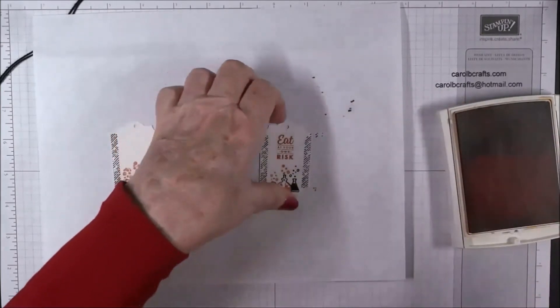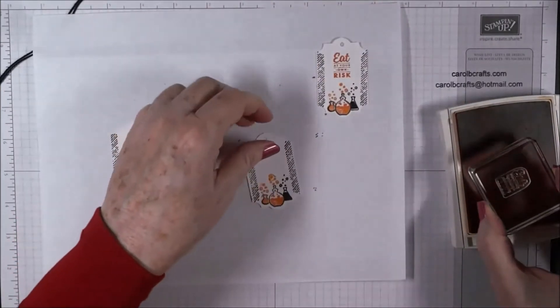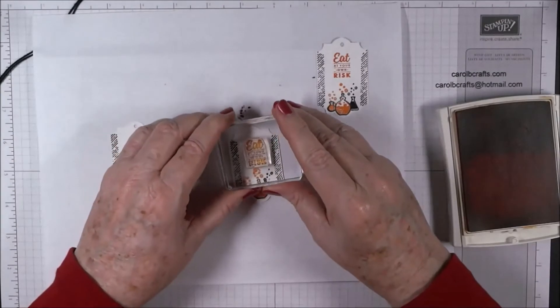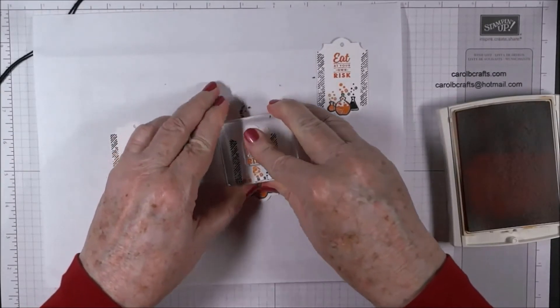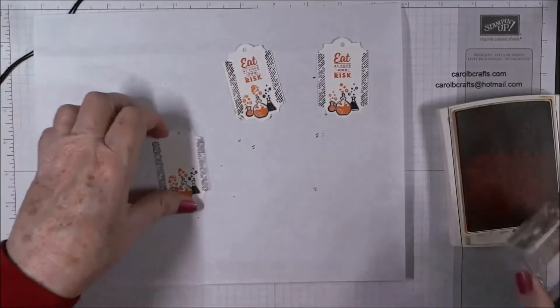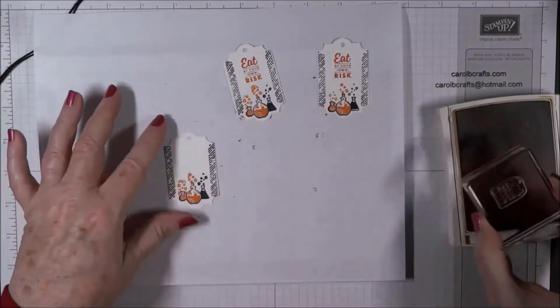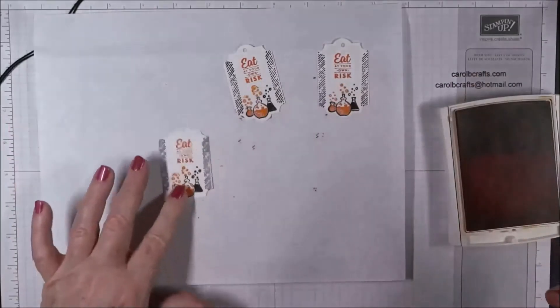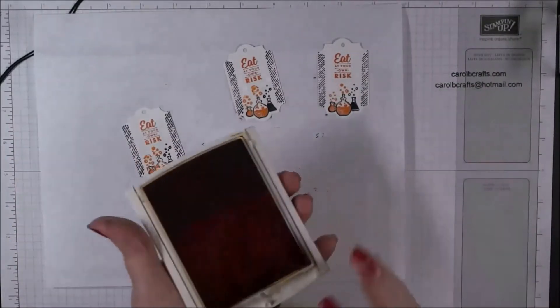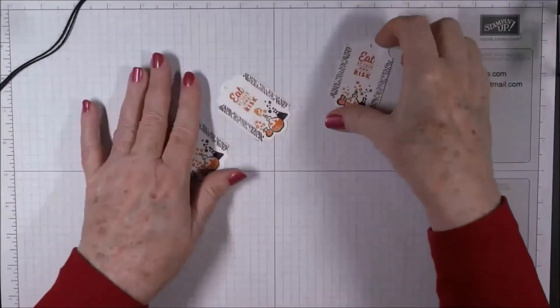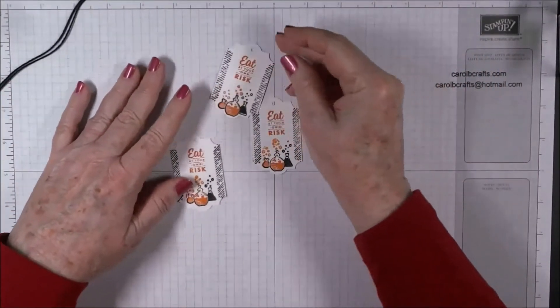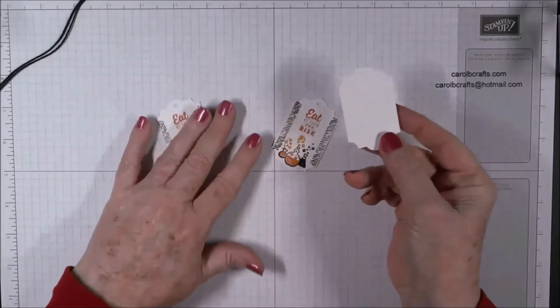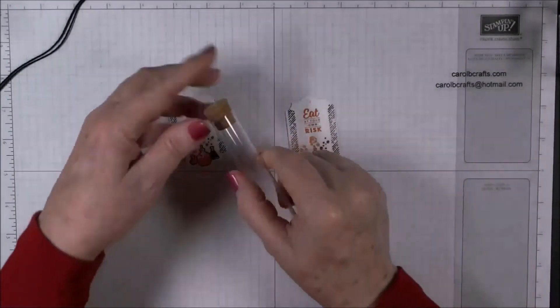I don't know if I would be brave enough to eat something that said eat at your own risk. This got a little messy here, but that's okay because it's just supposed to be bubbly stuff, so it doesn't really matter. I'll choose the two best ones and use those. Okay, we're done with our stamping. Now we're going to put them on. Let's see, I think I'll take this one and this one. These two are the best of the three, and you can always turn it over and do it on the back if you need to. Okay, so we're going to take our vial.